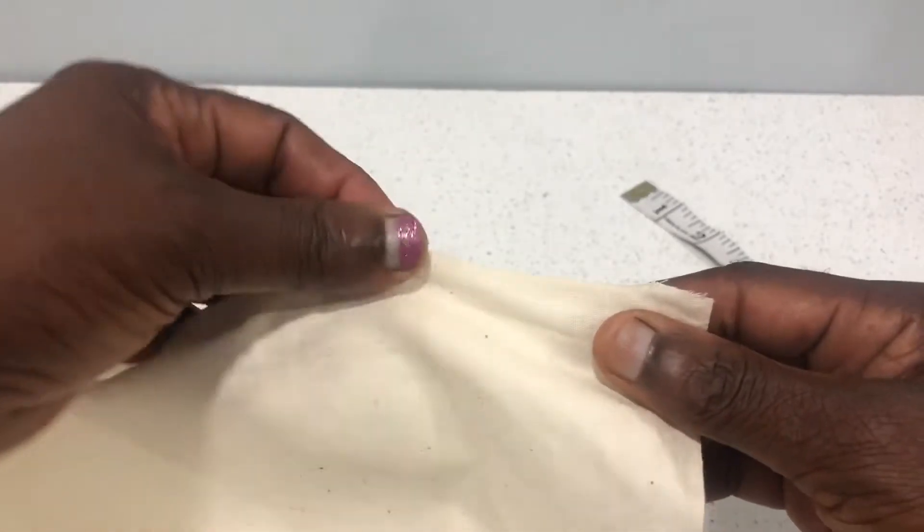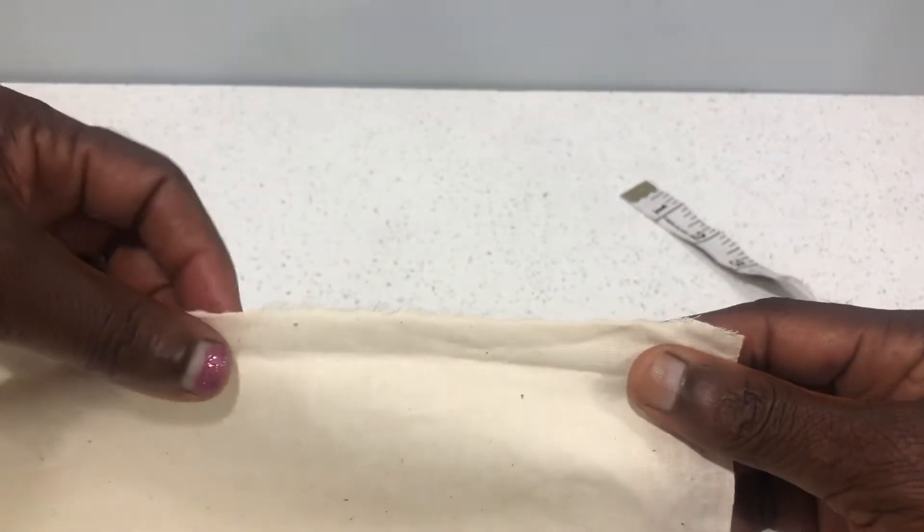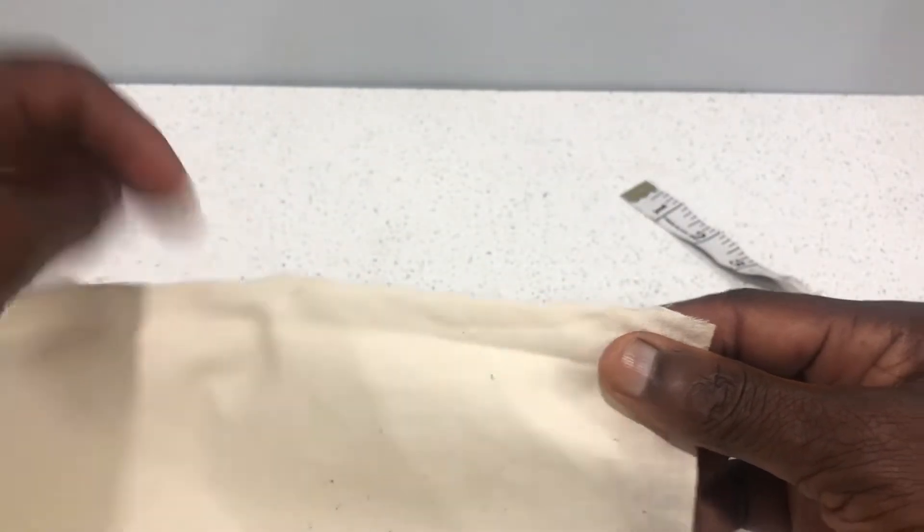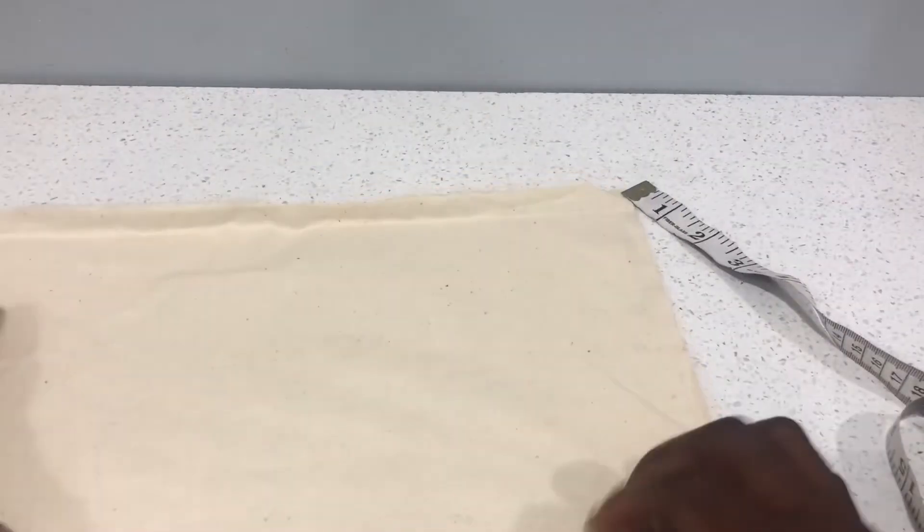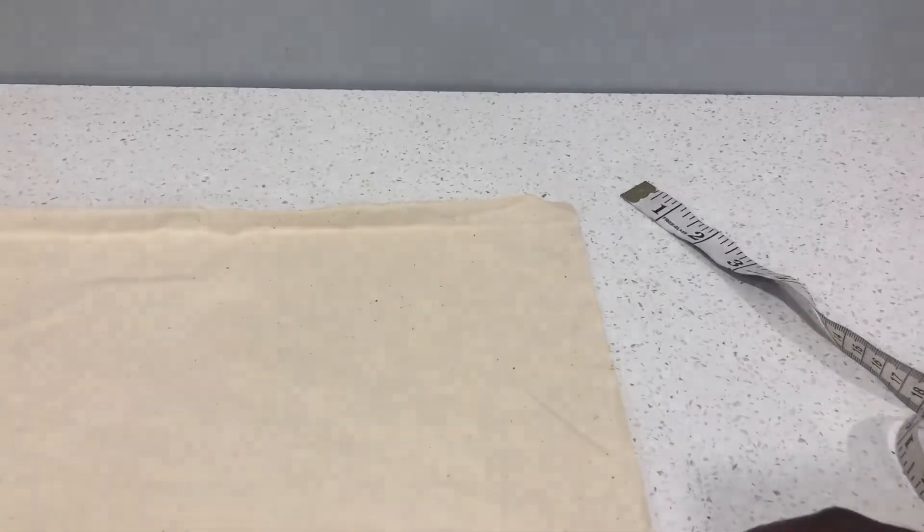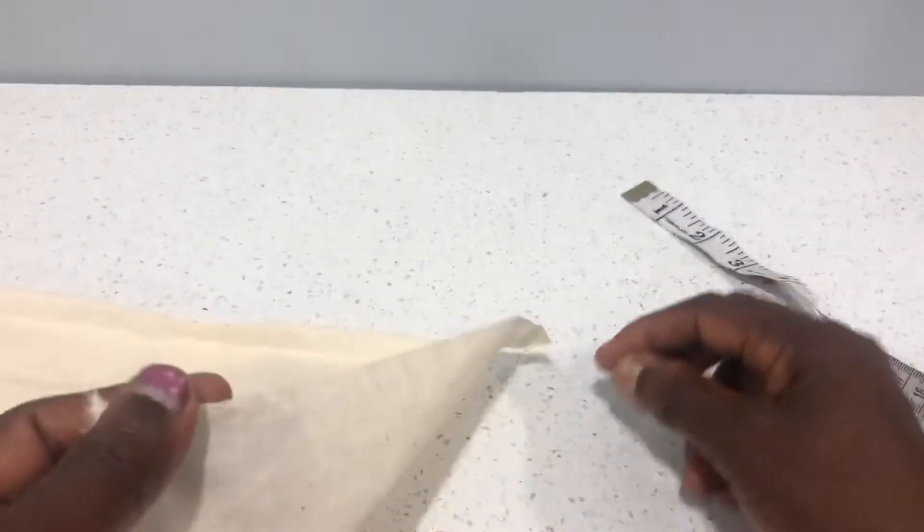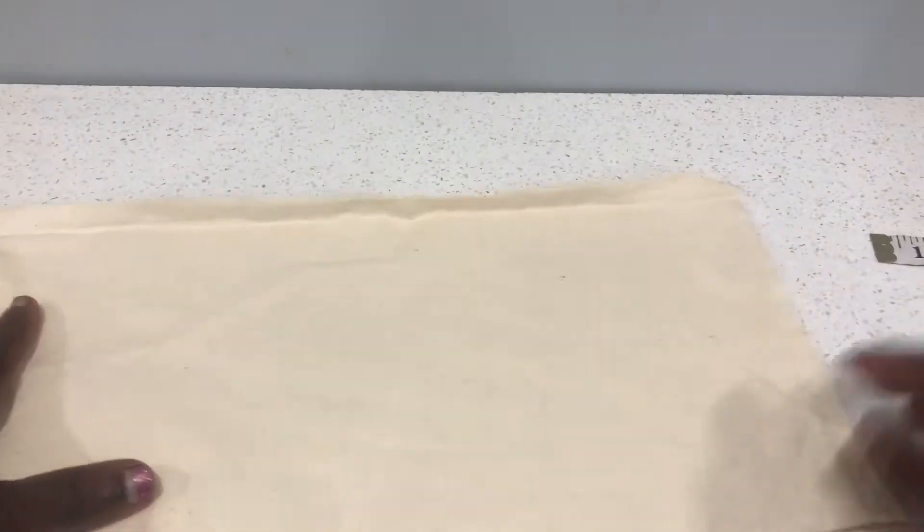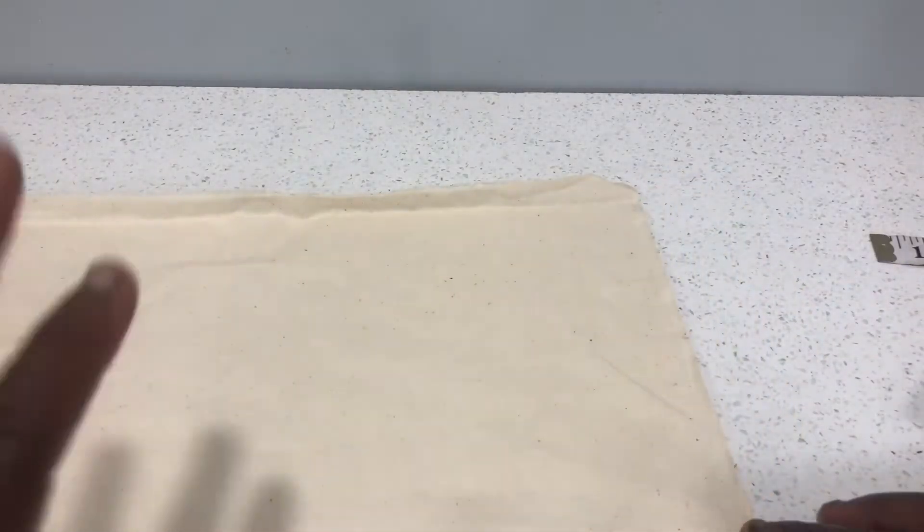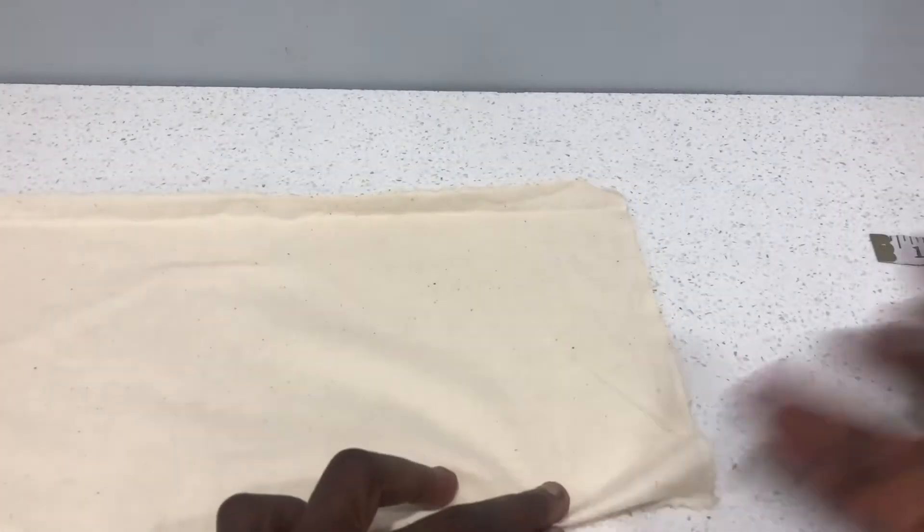The other edges have frayed edges—they have no selvage. Now one property of this selvage is that it is always straight because it's sealed. Many times people tend to cut off this selvage, but it helps us a lot in measurement.